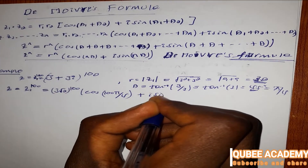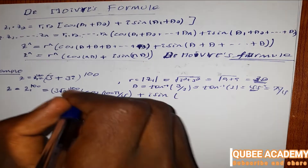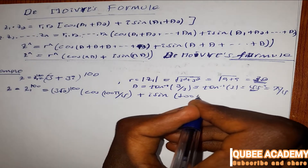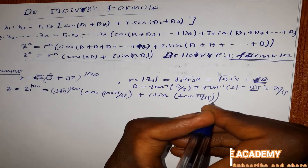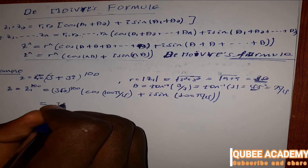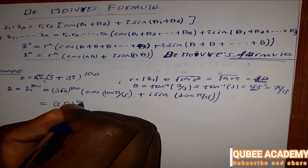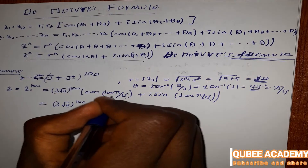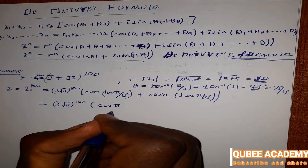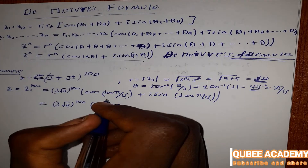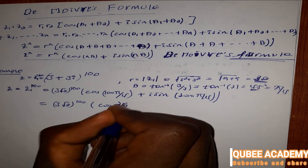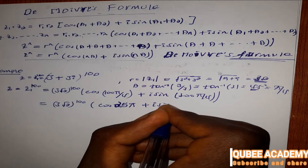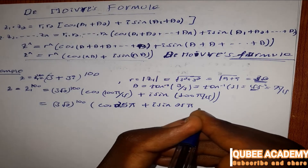With n times theta, where theta equals pi over 4, and n equals 100, we get 3 root 2 to the power of 100 times cosine of 25 pi, plus i times sine of 25 pi.